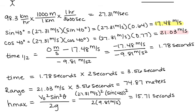To find H max, we took 27.31 meters per second squared and the sine of 40 squared and divided that by 2 times 9.81 and got 15.71 meters.